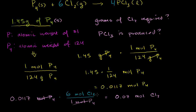So this is equal to 0.07 moles of chlorine gas required. For every 6 moles of chlorine gas that are required, one mole of solid phosphorus is required — or equivalently, for every mole of phosphorus required, you need 6 moles of chlorine gas. We get that directly from the balanced equation. So we've figured out that 0.07 moles of chlorine gas are required.